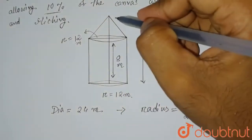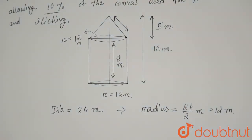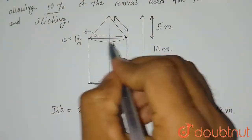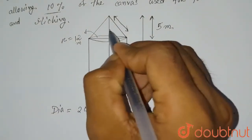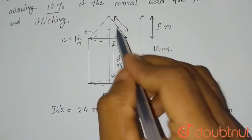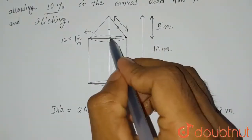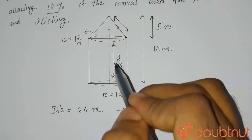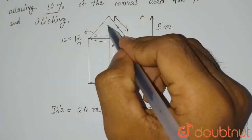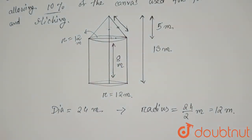Now we need to find the slant height of the cone. We can use the Pythagorean theorem here. The radius is 12 and the height of the cone is 5. So the slant height will be the square root of 5 squared plus 12 squared.